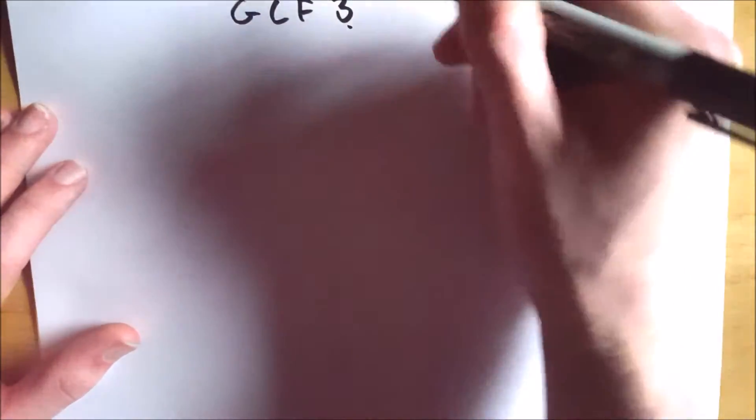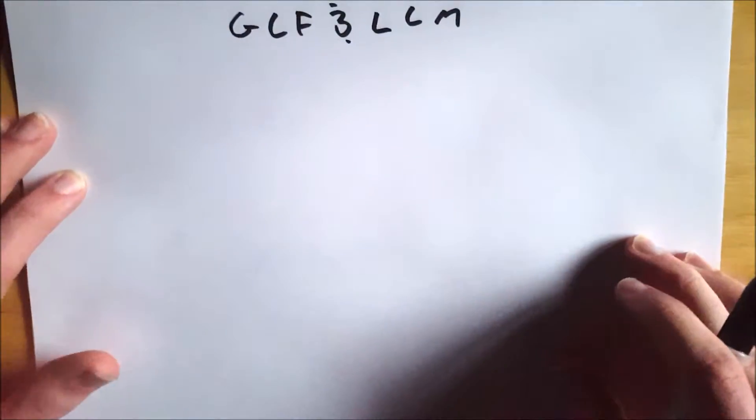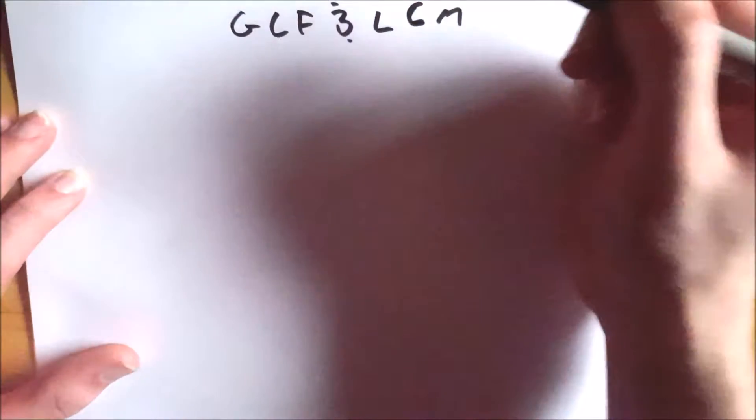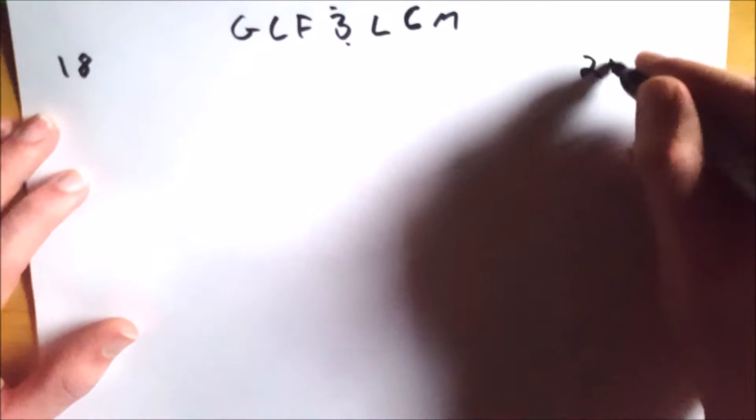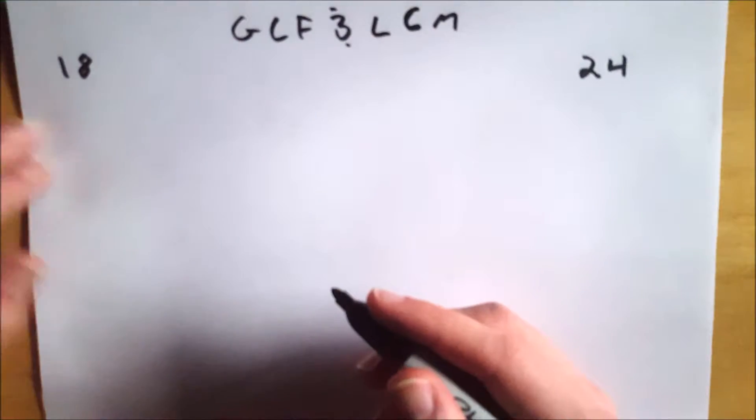So we're going to look at two examples as we hunt down the GCF and the LCM, greatest common factor and least common multiple. Sorry, my L and C look similar. So we're going to start off with 18 and 24, and then we'll look at one more example after we get through this.